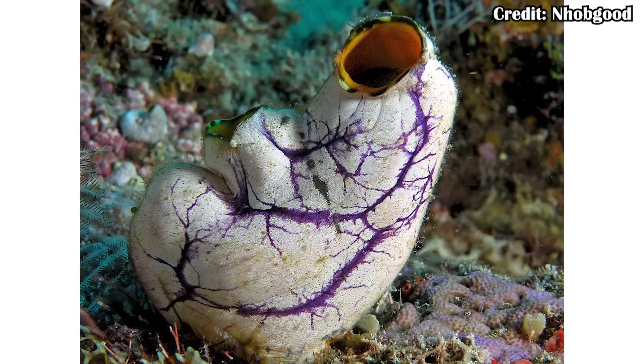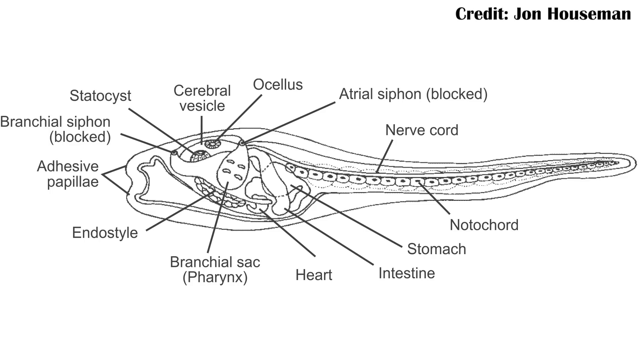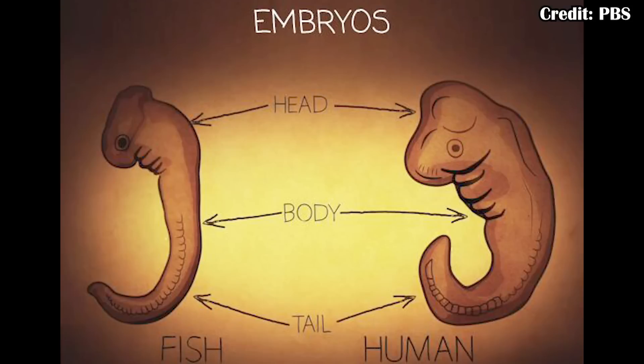Now, animals don't need these traits for their entire lives. For example, tunicates — as shown in the image I put up earlier — don't look like they have any of those features because they basically sit on the sea floor and filter feed. But as larvae, they do have those traits. And even when we're looking at tetrapods — things that live on land — many of them lost tails. We lost tails, frogs lost tails. But importantly, when developing, we still have those features. A fetus still develops a tail. So that's the phylum Chordata.